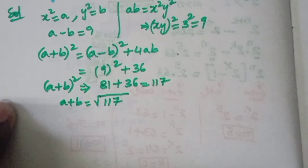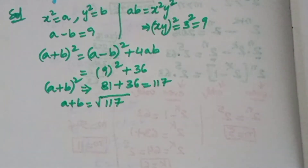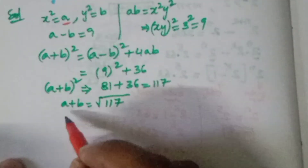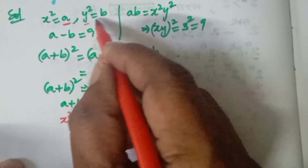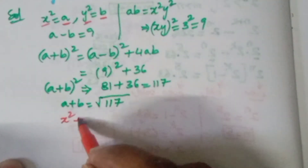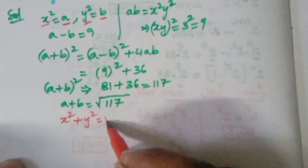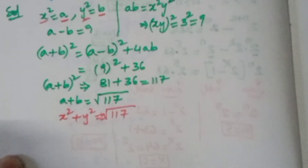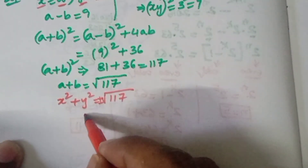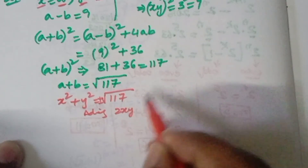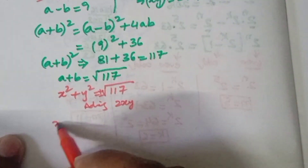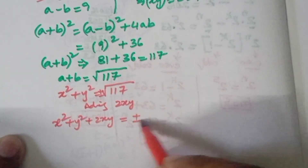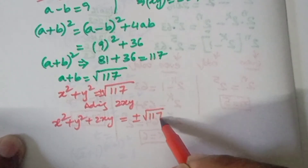Replacing the values of a and b: a is x squared and b is y squared, so x squared plus y squared equals the square root of 117, which can be plus or minus root 117. Now adding 2xy on both sides: x squared plus y squared plus 2xy is equal to plus or minus root 117 plus 2xy.